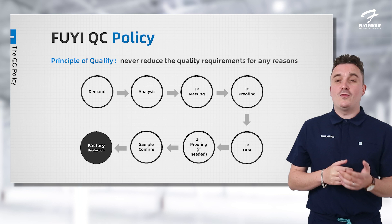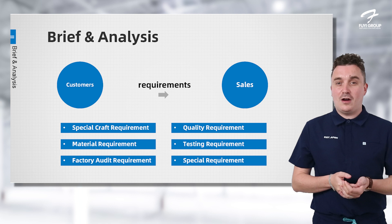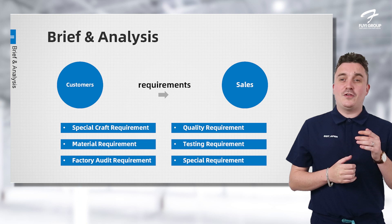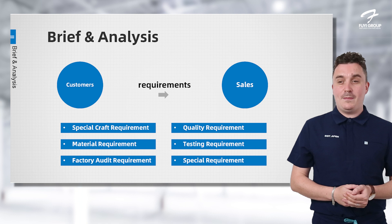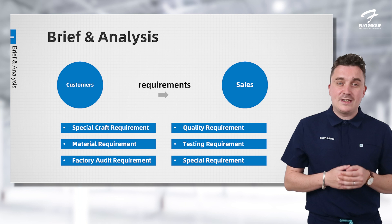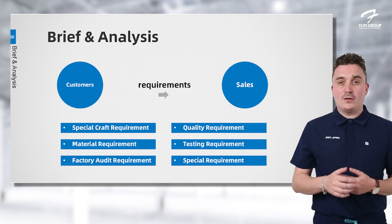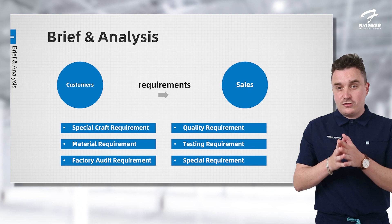The brief analysis is about what you want from us — what demands you have for the product. This is broken down into six individual aspects: special craft requirements, material requirements, factory order requirements, quality requirements, testing requirements, and special requirements. All six of these aspects are very important to the brief and analysis, and once we walk you through these different requirements, we can get a better picture of the products you'd like.